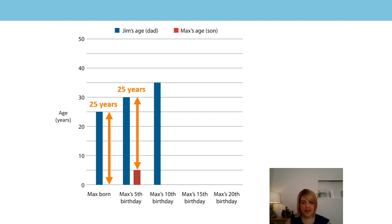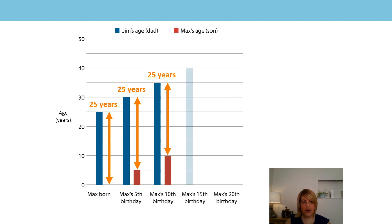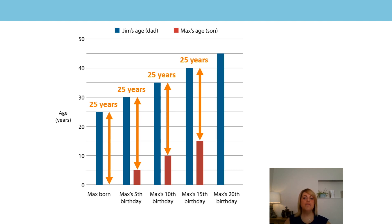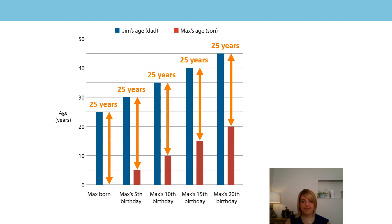When Jim is 35, Max is only 10. The difference in their ages hasn't changed — it is still 25 years. When Jim is 45, Max is 15. What is the difference in their ages now? Yes, that's right — 25 years. When Jim is 45, Max is 20. The difference in their ages hasn't changed; it is still 25 years. Is the difference between their ages always going to remain the same? Yes it is. So can you tell me how old will Max be when Jim is 75? Pause the video if you like and have a go at working it out.